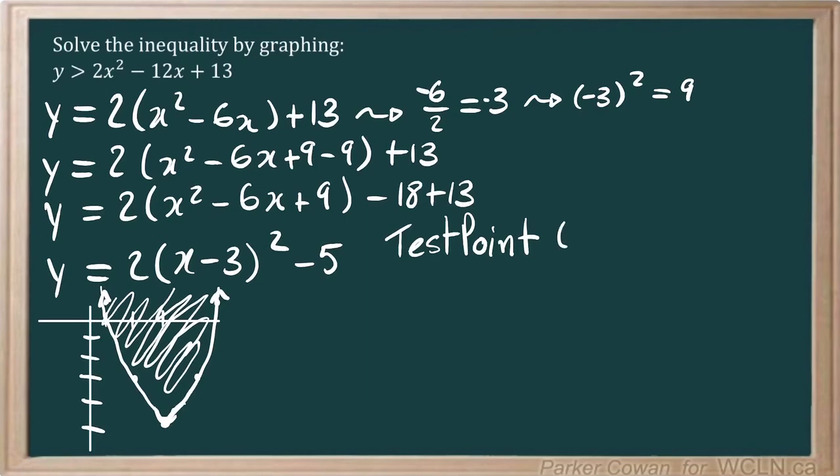So we can assume that this inequality will not be satisfied. But let's go ahead and try it out. So test point at 0, 0, we have 0 is greater than 2 times 0 squared minus 12 times 0 plus 13. So this all just comes out to 0 is greater than 13, which is obviously false.